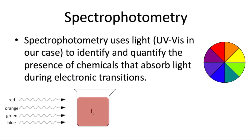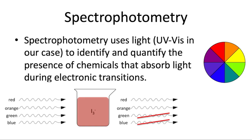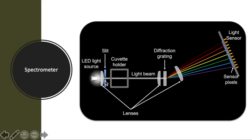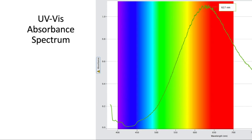A quick reminder about spectrophotometry: we're going to shine light on a sample, and some of it might go through and some might not. We have a red-orange solution of I3- triiodide ions, so the green and blue wavelengths of light won't make it through — they get absorbed. The red and orange light are transmitted, which is what reaches our eye. In the spectrometer, the sample sits in the cuvette, light shines through, and the detector shows which colors are absorbed or transmitted. This produces a spectrum showing all the different wavelengths and which get absorbed or transmitted.